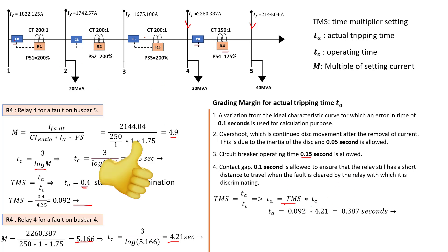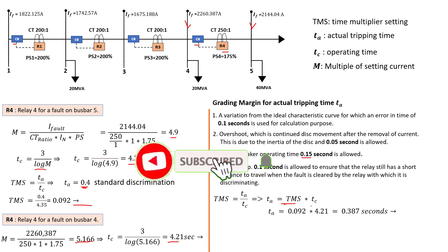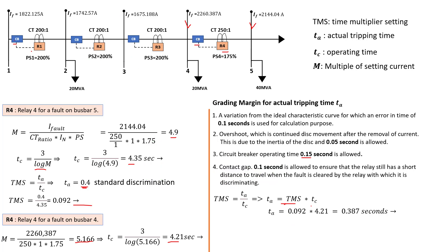We're going to stop here because this tutorial is getting very long. In the next tutorial we'll continue — we need to do relay three for both bus bar three and four, then relay two, relay one, and so forth. Stay tuned for part two to conclude the design of this electrical network. If you liked this tutorial please give it a thumbs up, subscribe to the Simtech channel, and hit the notification bell so you don't miss the next tutorial. Thank you.